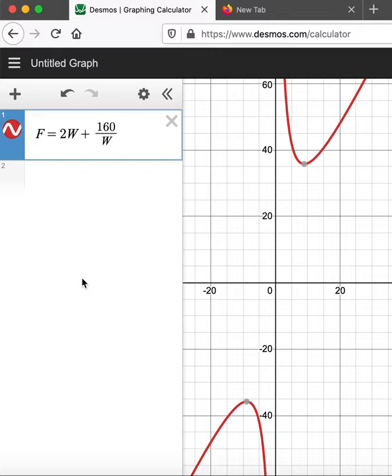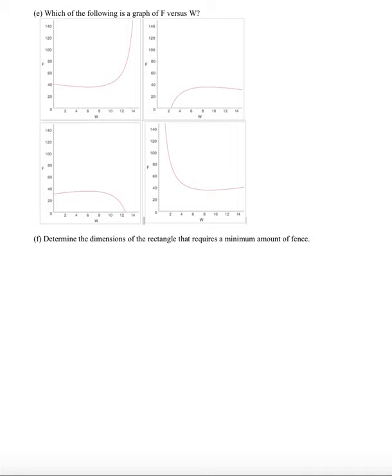Keep in mind that our horizontal variable is W, which is the width of the pasture. And the output variable is the amount of fence that's required to enclose the pasture. Now our goal in this problem is to minimize the amount of fence used because we want to save costs. So which graph is it? It is this graph here. And that's the function F, which is the amount of fence. So we're actually looking for the minimum. We need to know at what width does that occur.